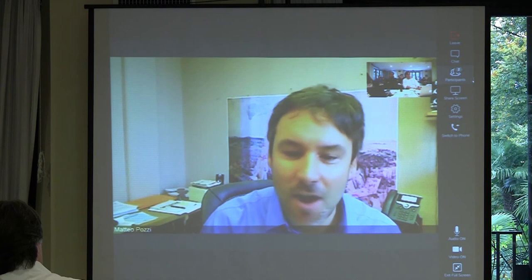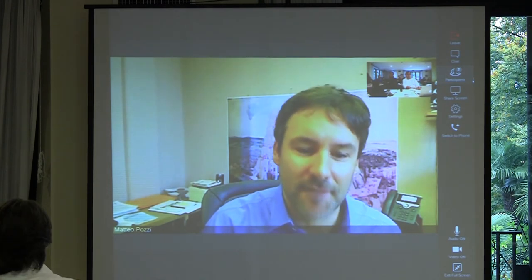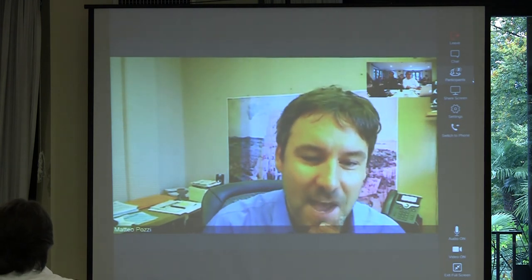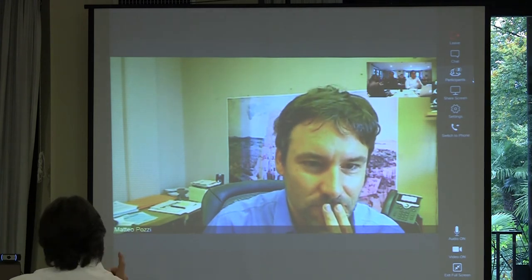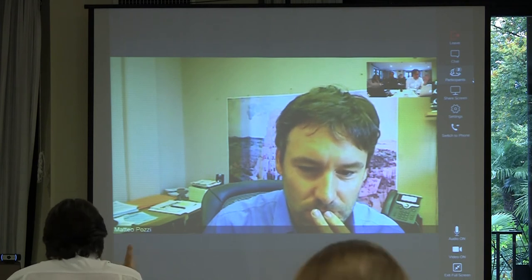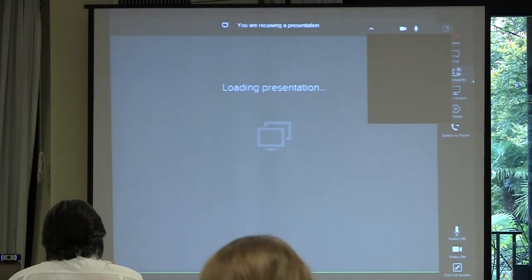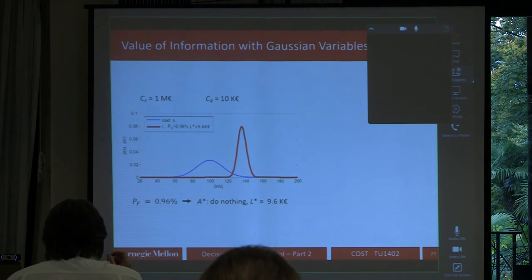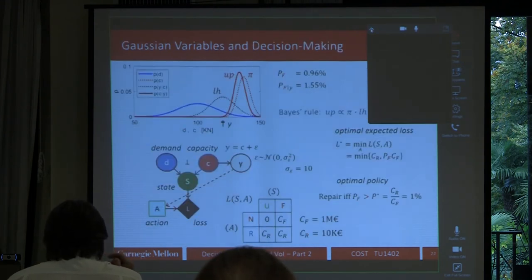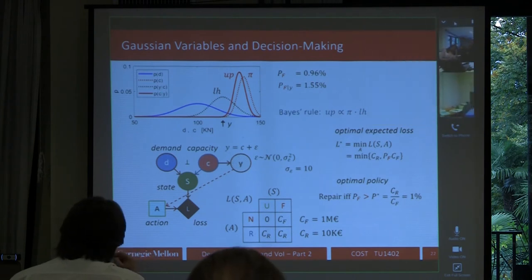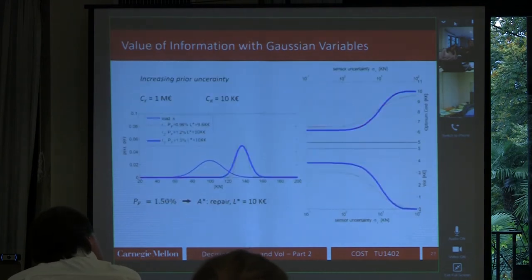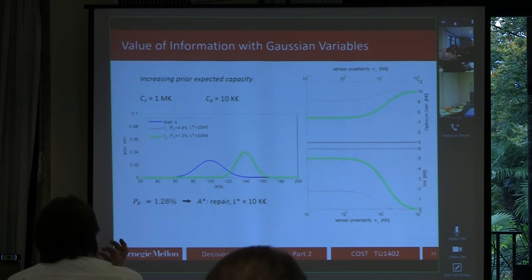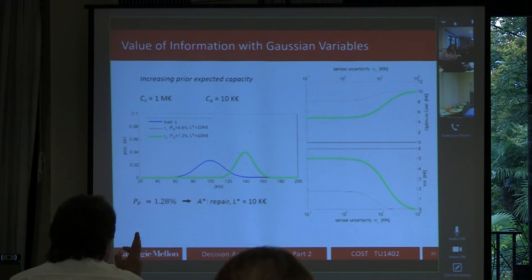A student asks about slide 30: the concept of optimal cost. The instructor explains: in the specific setting shown, the prior probability of failure is about 5%, which is above the 1% threshold, so the prior action is to repair and the expected cost is €10k. If the sensor is very noisy, you learn nothing and the expected cost stays at €10k. If the sensor is very precise, there is a chance you discover the structure is strong enough to skip repair, reducing the expected cost — hence the positive value of information.